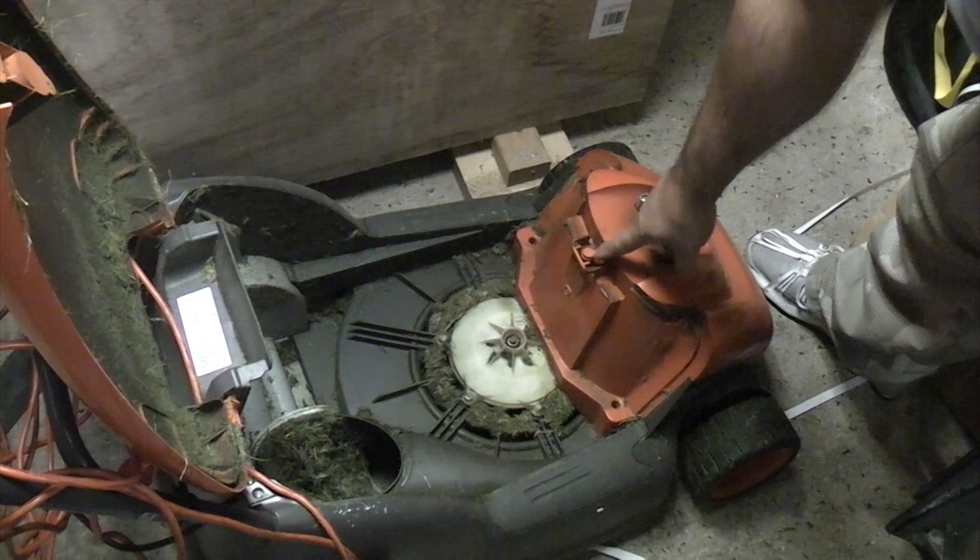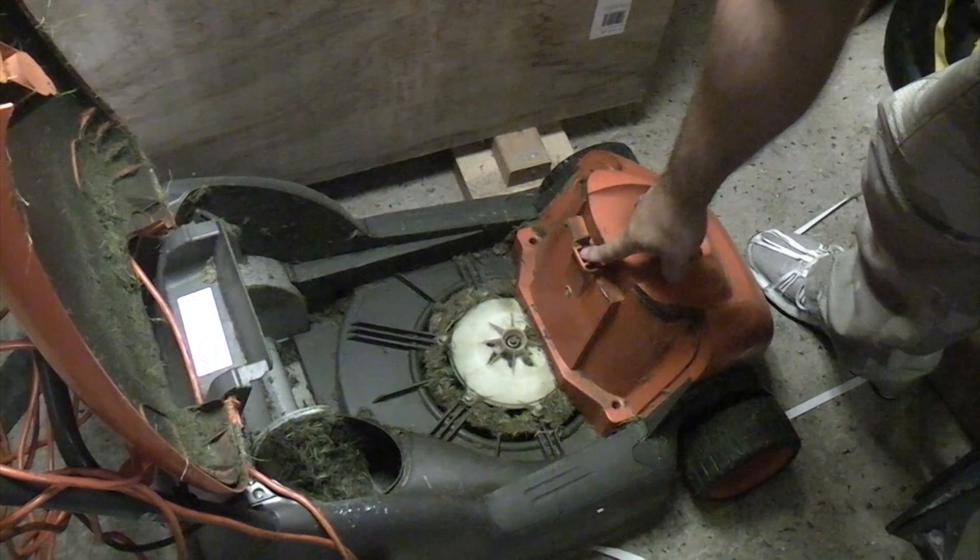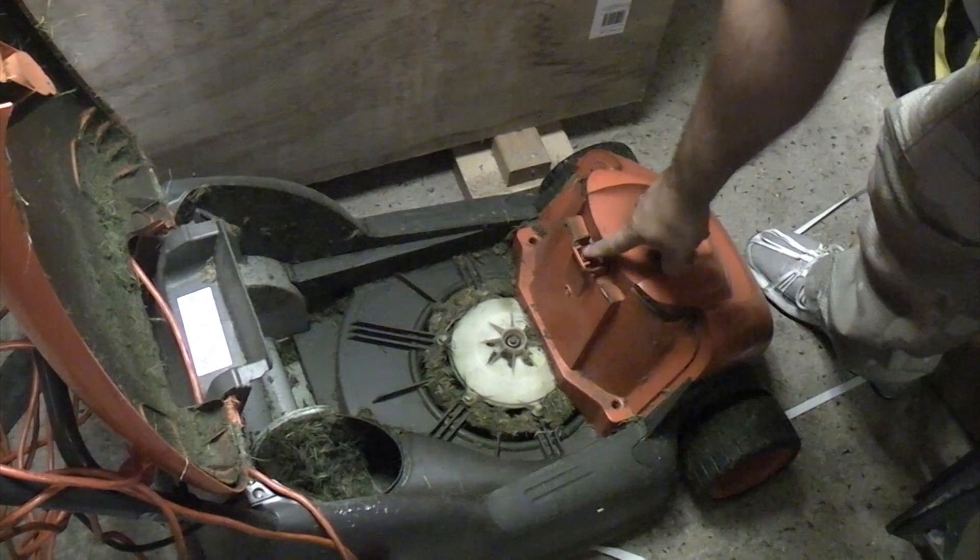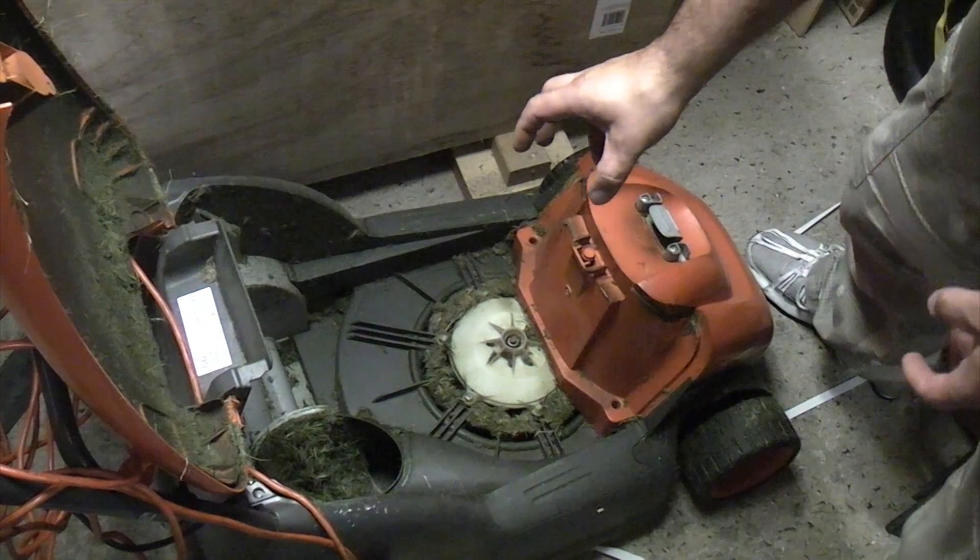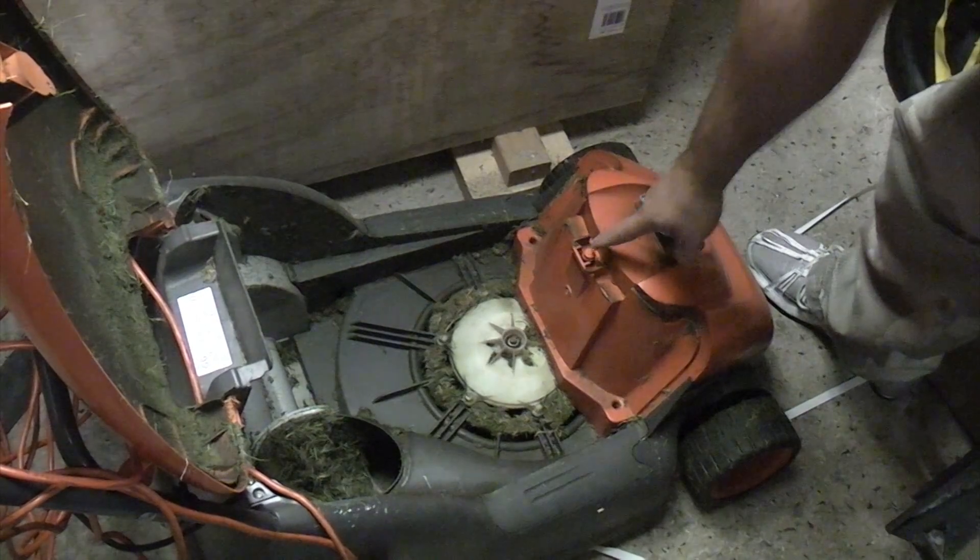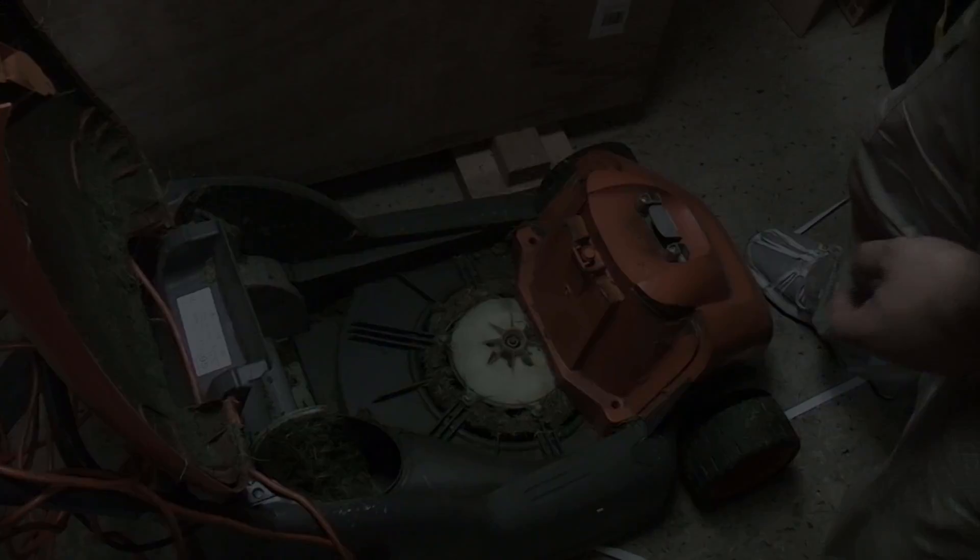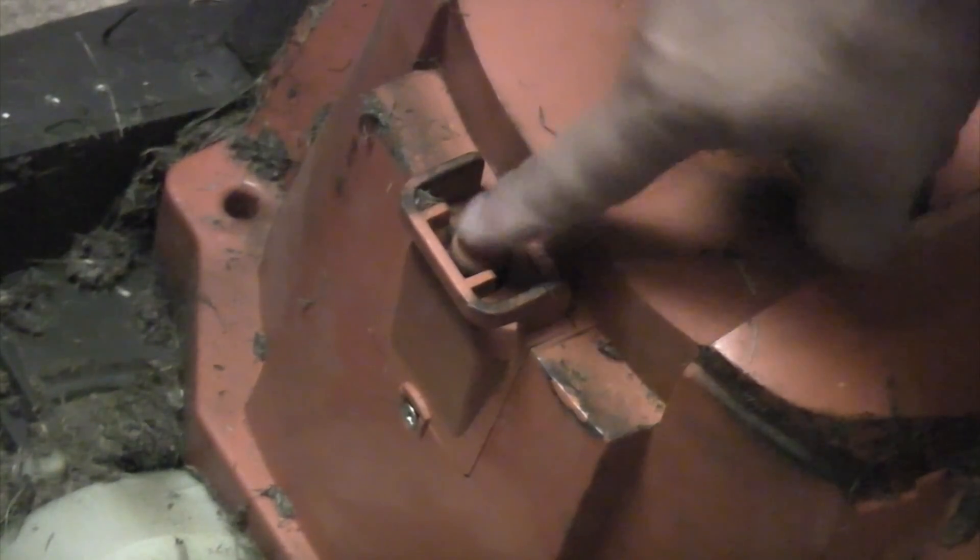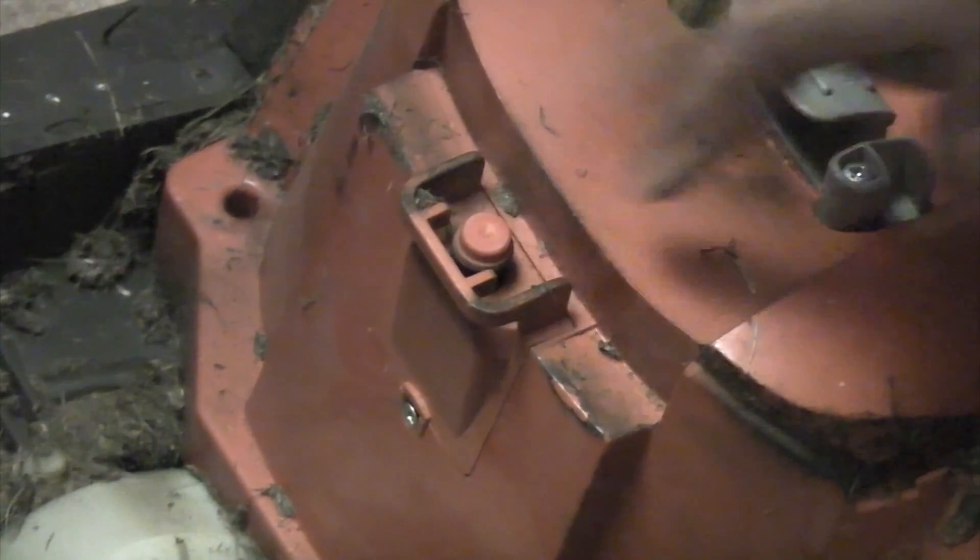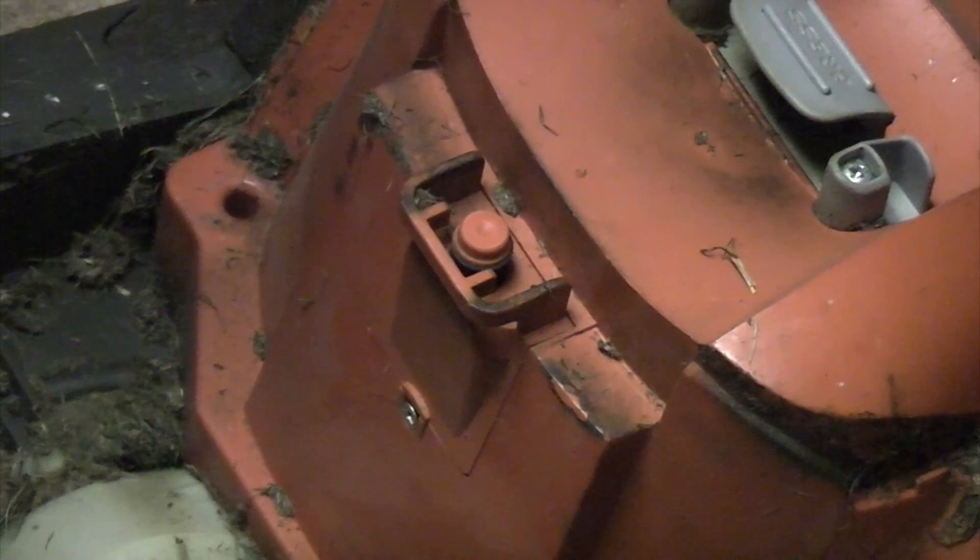And then if you look there, there's actually a micro switch. So that will actually prevent the lawnmower from working if that contact isn't made. So that's the actual switch which is a safety micro switch. So we're just going to take that out and then we'll test it.